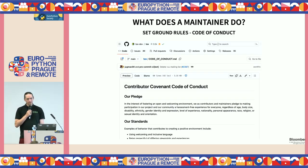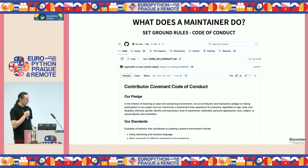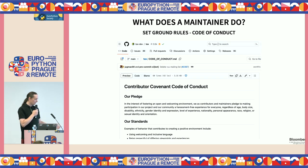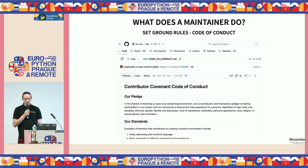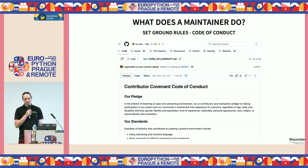Another important task is to set the ground rules for how people should interact with your project. This means you should definitely define a code of conduct. This can be a small markdown file inside your GitHub project where you outline what the expectations are. This comes in handy if someone comes angrily with pitchforks at your issue tracker — you have something to point to for why and how you deal with them.